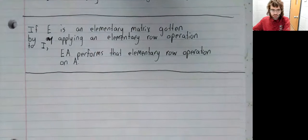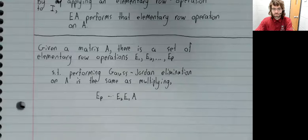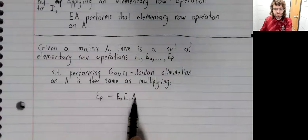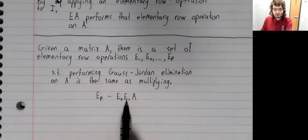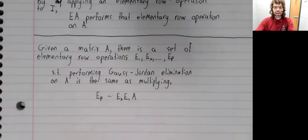A corollary to that: Gaussian and Gauss-Jordan elimination are just series of row operations, so we can think of Gauss-Jordan or Gaussian elimination as a series of matrix multiplications. If you have a matrix A that you want to put in reduced row echelon form, you do it by performing a bunch of row operations. This product performs the first row operation, this product performs the second row operation, and so on, until you've performed your last row operation and put the matrix into reduced row echelon form.